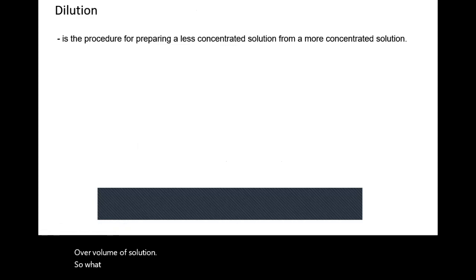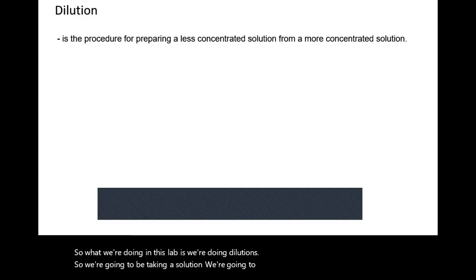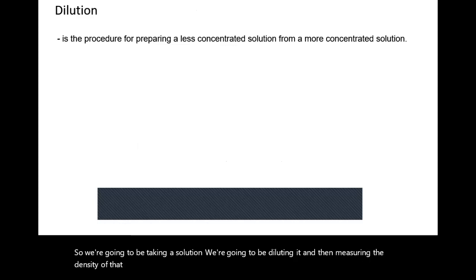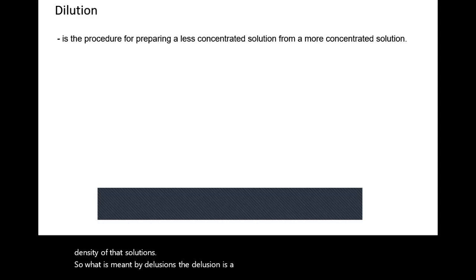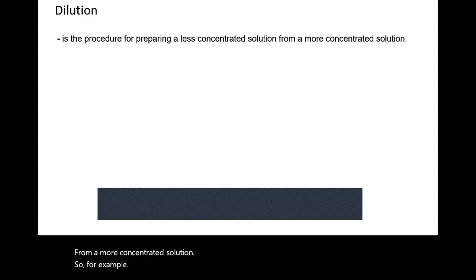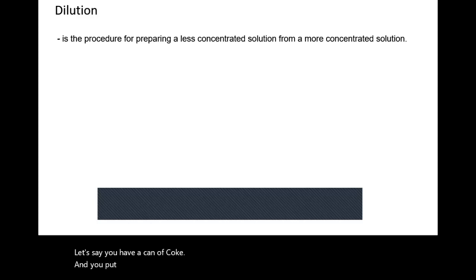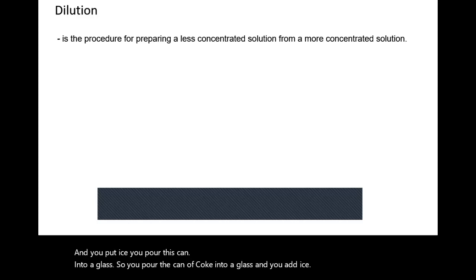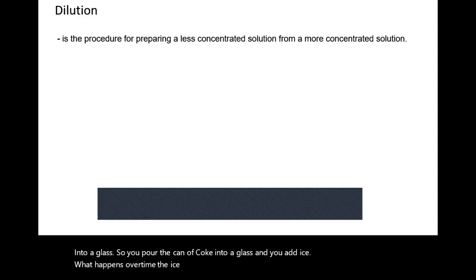So what we're doing in this lab is dilutions. We're going to be taking a solution, diluting it, and then measuring the density of that solution. Dilution is a process of making a less concentrated solution from a more concentrated solution. For example, let's say you have a can of Coke — you pour it into a glass and add ice. What happens over time is the ice melts, causing the Coke to be diluted, and you get that watery taste.